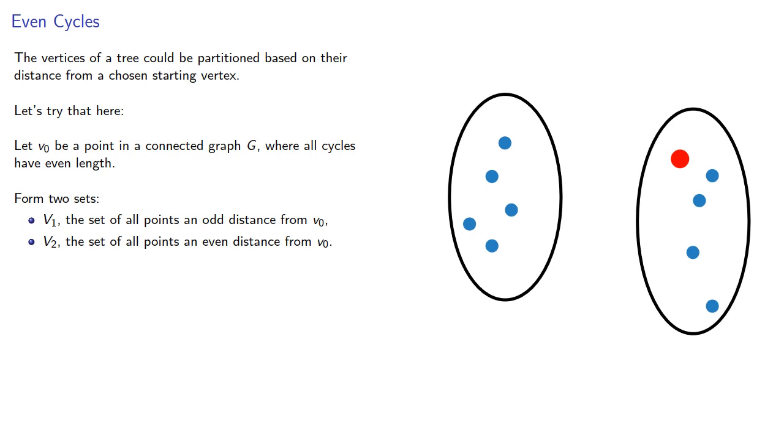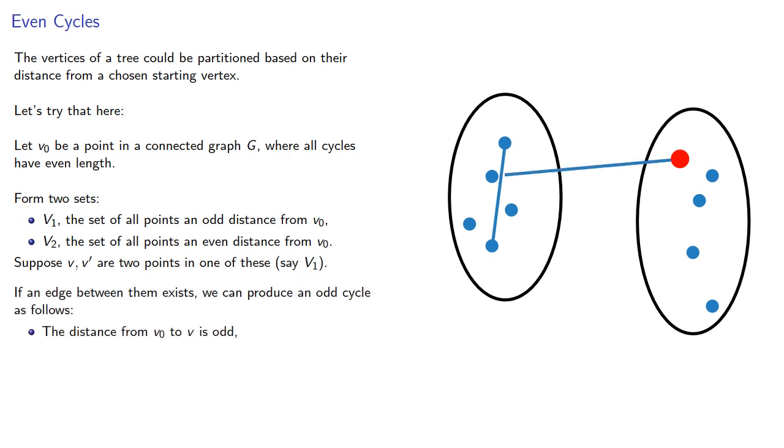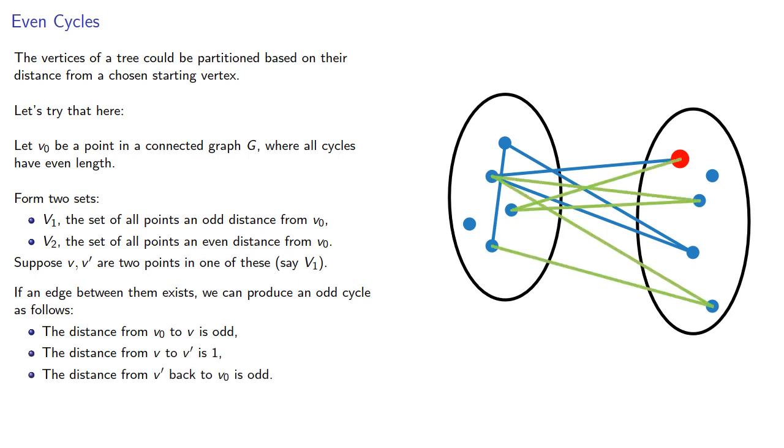Suppose v and v prime are two points in one of these sets, say v1. If an edge between them exists, we can produce an odd cycle as follows. The distance from v0 to v is odd, the distance from v to v prime is 1, and the distance from v prime back to v0 is odd. So an odd length cycle exists. Or does it?